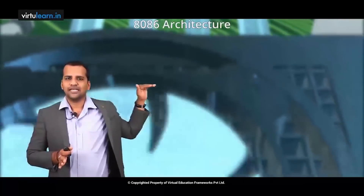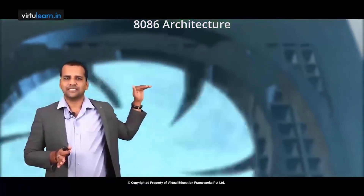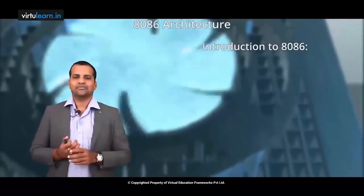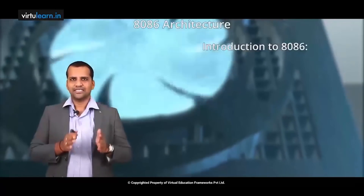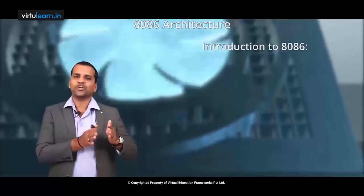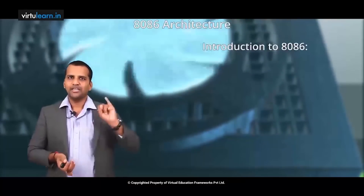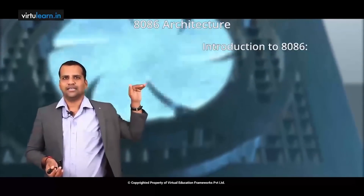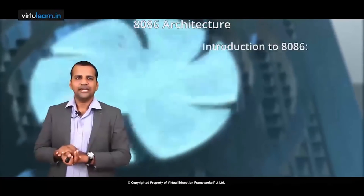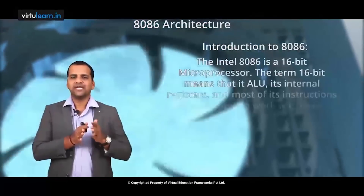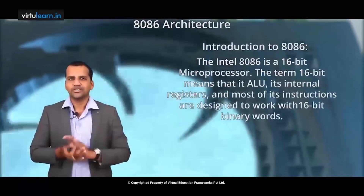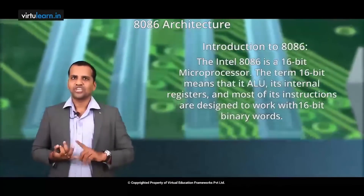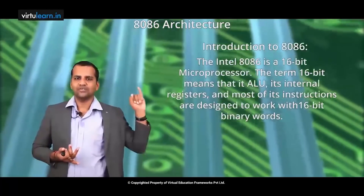What exactly is the 8086 processor? The 8086 microprocessor is built by a company called Intel. It is a 16-bit microprocessor, and it is mainly used for the arithmetic logic unit, which we call the ALU.